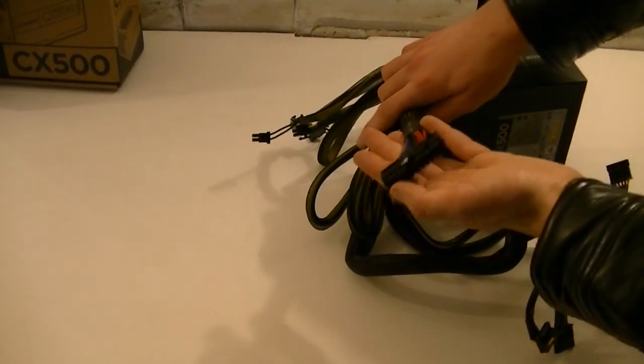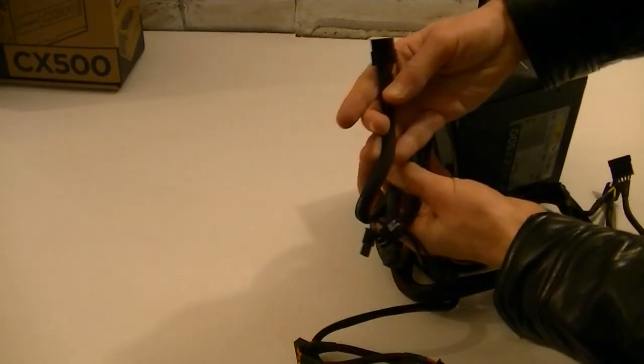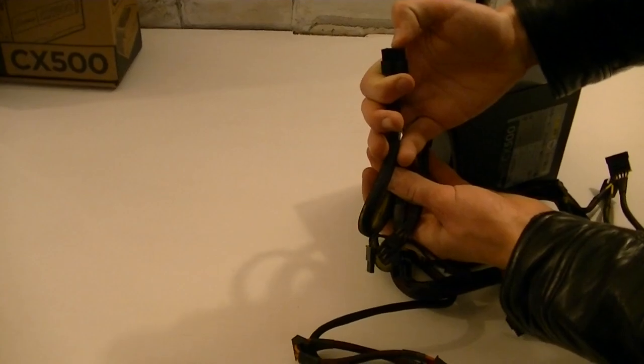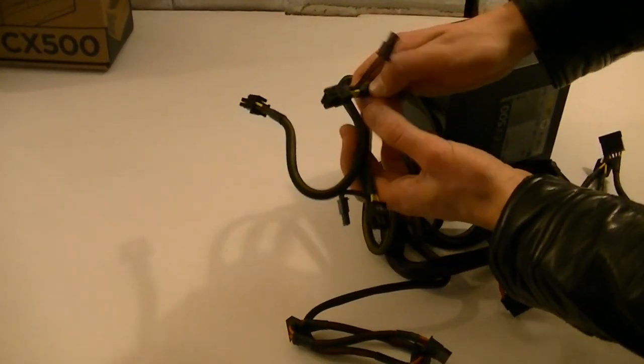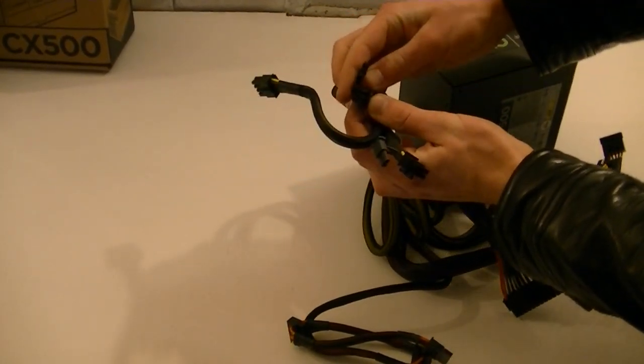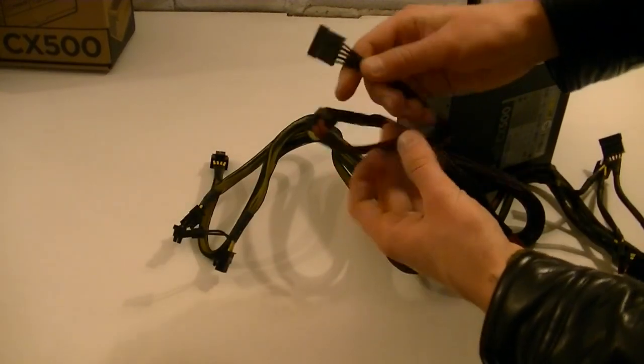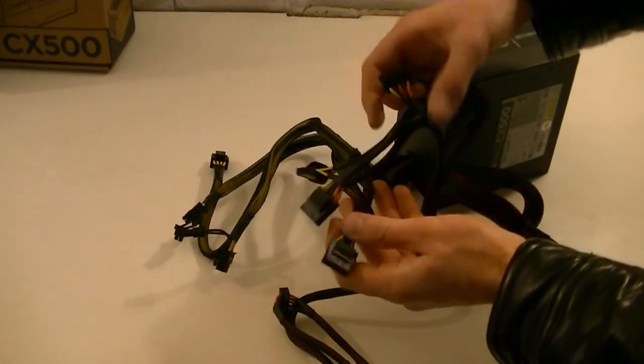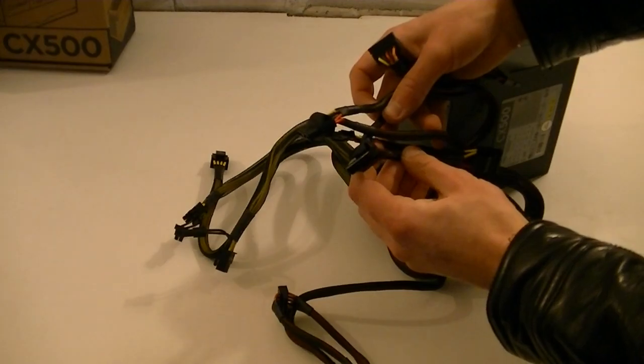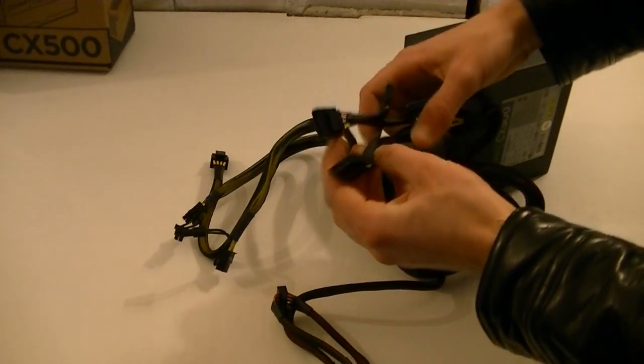Now there are the power connections. Here is the 20 plus 4 pin power connector, here is the 4 plus 4 pin ATX 12 volt power connector and here are the two separate cables with 6 plus 2 pin PCI Express connections. Then you also get 3 power connectors and lastly another line with two more connectors. And here are 4 molex and one floppy connector.